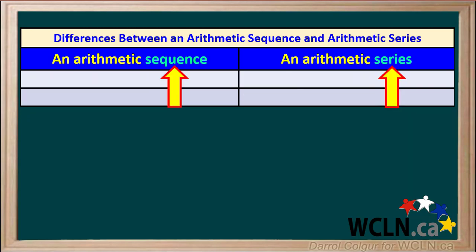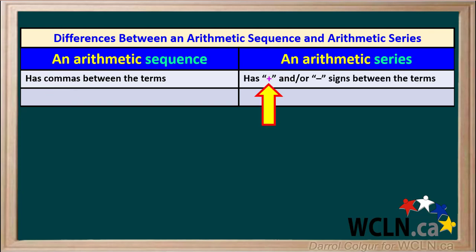Now we'll look at the differences between an arithmetic sequence and an arithmetic series. A sequence has commas between each term, whereas a series has either plus or minus signs between the terms. An arithmetic sequence is a list of numbers, but in an arithmetic series, we are concerned with the sum of a set of numbers.